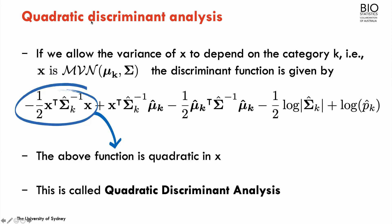The assumption in linear discriminant analysis is that the covariance matrix is the same for the different categories of the outcome — different means for the predictors, but the same variance across categories. If we relax that assumption and allow each category to have its own covariance matrix, we can write the discriminant function with additional terms: a quadratic term in X and the logarithm of the covariance matrix. Because of this quadratic term, this is called the quadratic discriminant function, giving rise to quadratic discriminant analysis.